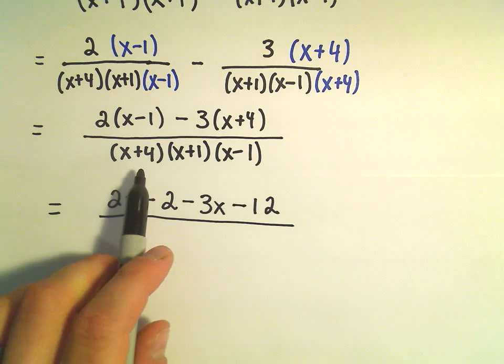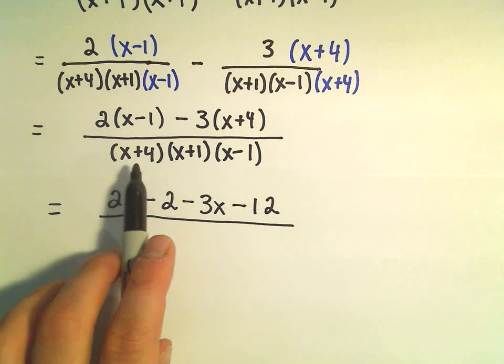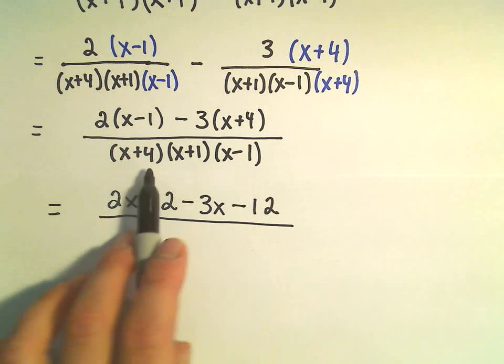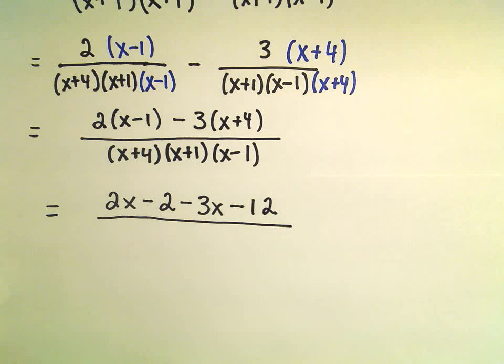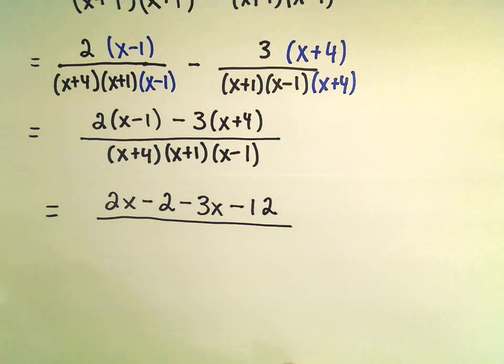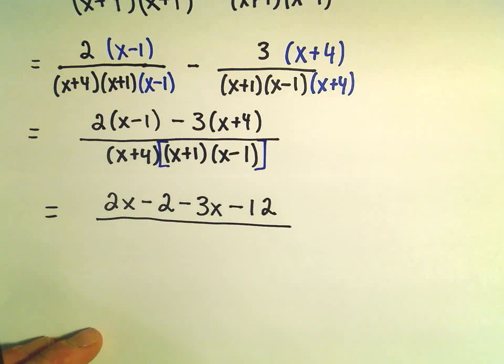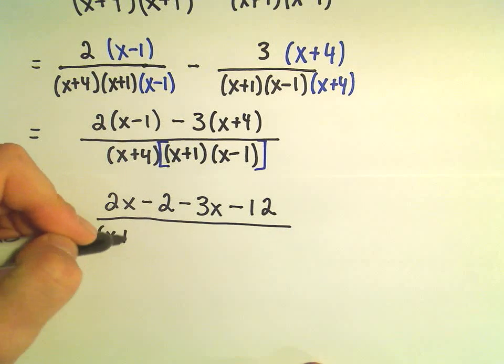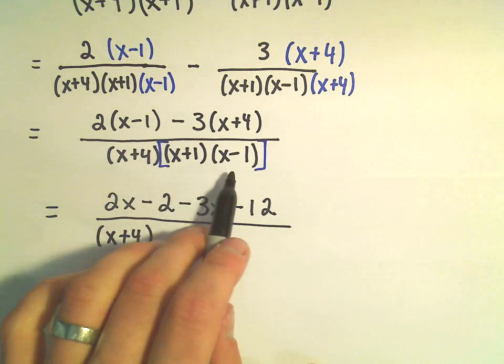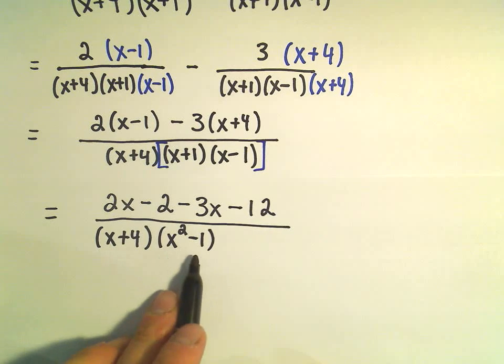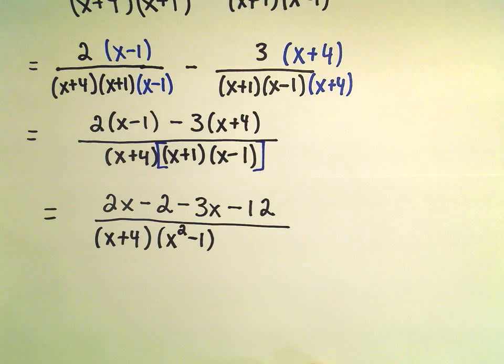Okay, in the denominator, we either have to multiply the first factor by the second factor, or the first factor by the third, or the second by the third. We can multiply them in any order we want. I'm going to actually multiply the x plus 1 and the x minus 1 because I think algebraically that's kind of easier to do. I know it's a difference of perfect squares. I know what x plus 1 times x minus 1 is. It's just x squared minus 1.